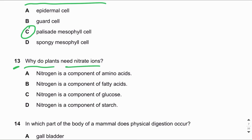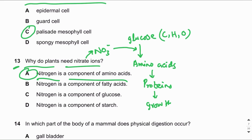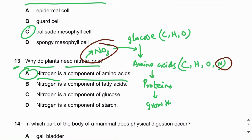MCQ number thirteen: Why do plants need nitrate ions? Nitrate ions are required for growth because they provide nitrogen for the synthesis of amino acids. Photosynthesis produces glucose, which reacts with nitrate to form amino acids; amino acids are then used to make proteins, which are required for growth. Glucose contains only carbon, hydrogen, and oxygen, whereas amino acids also contain nitrogen — and the source of that nitrogen is nitrates.